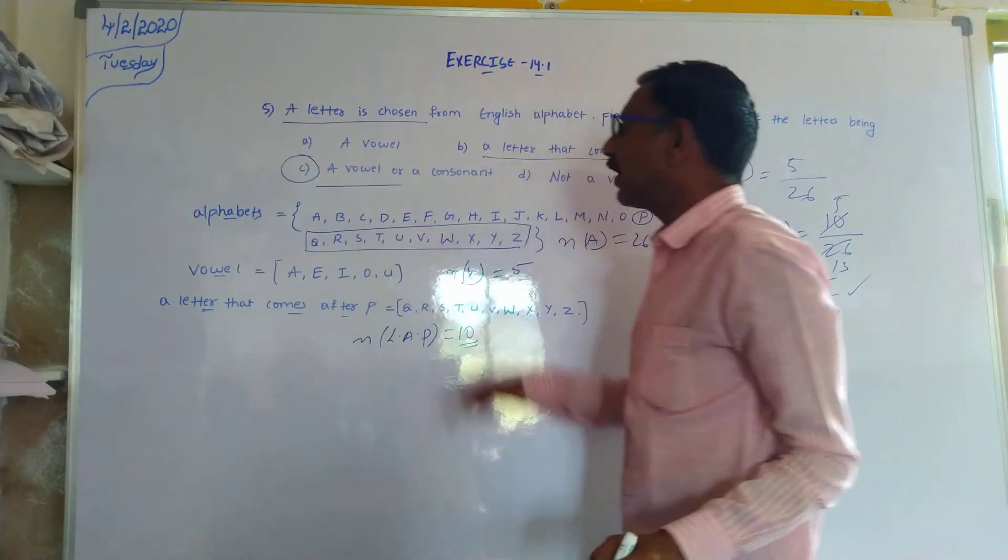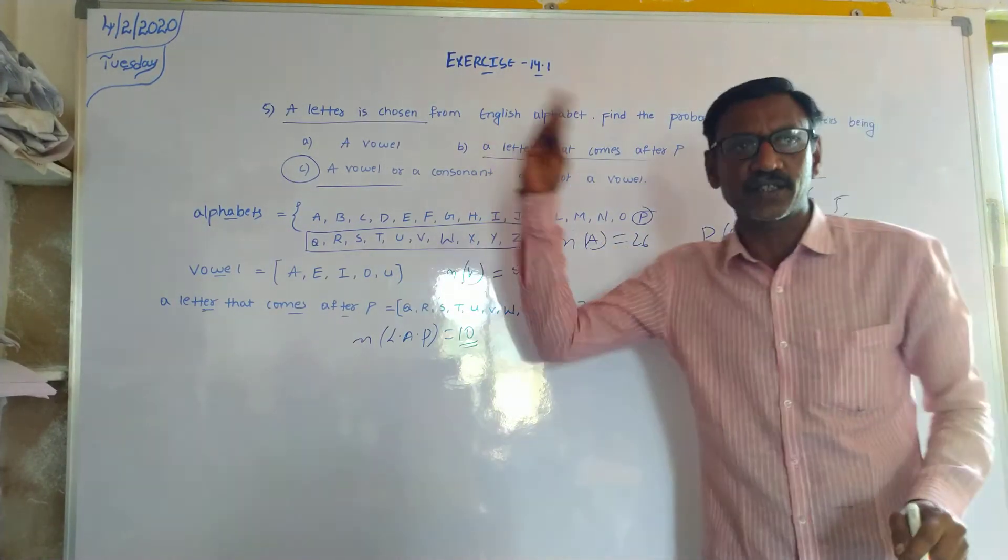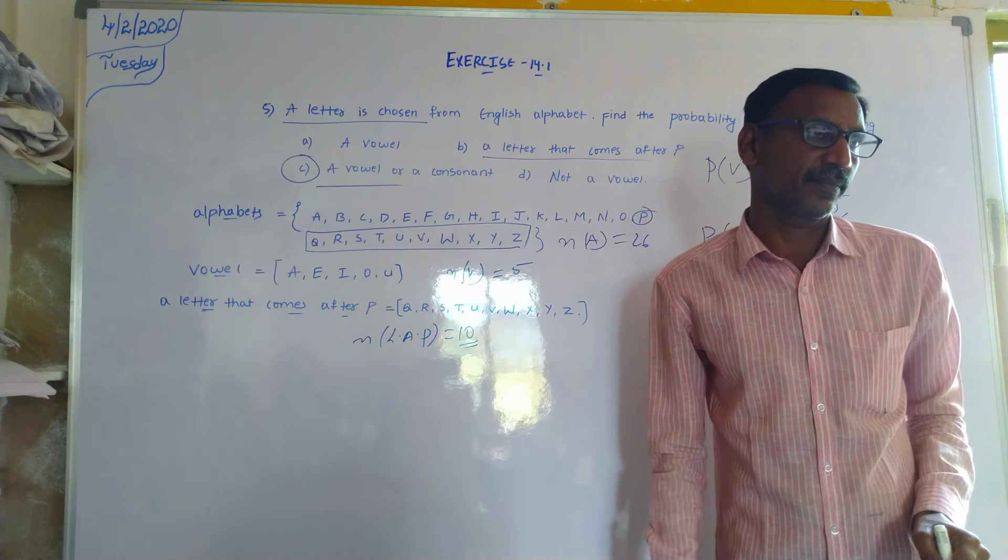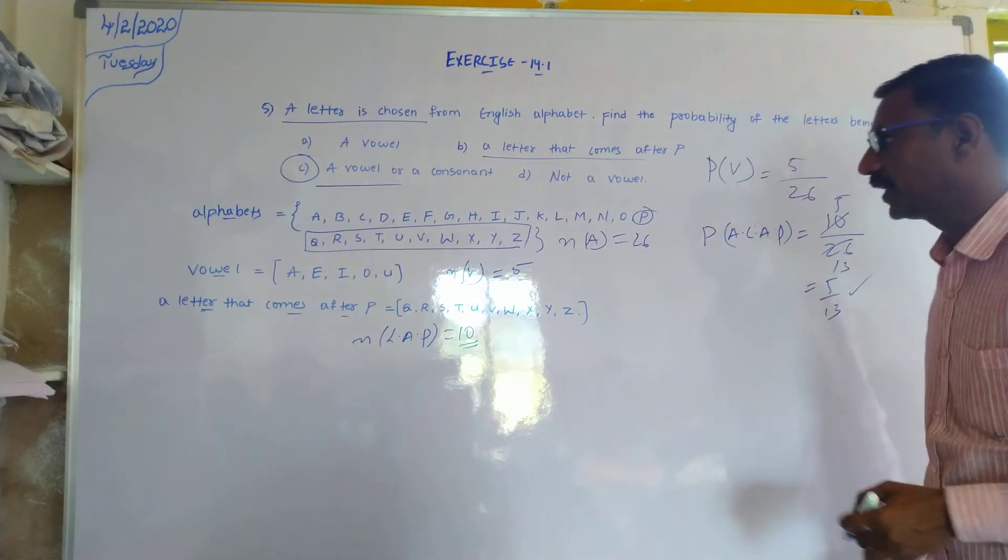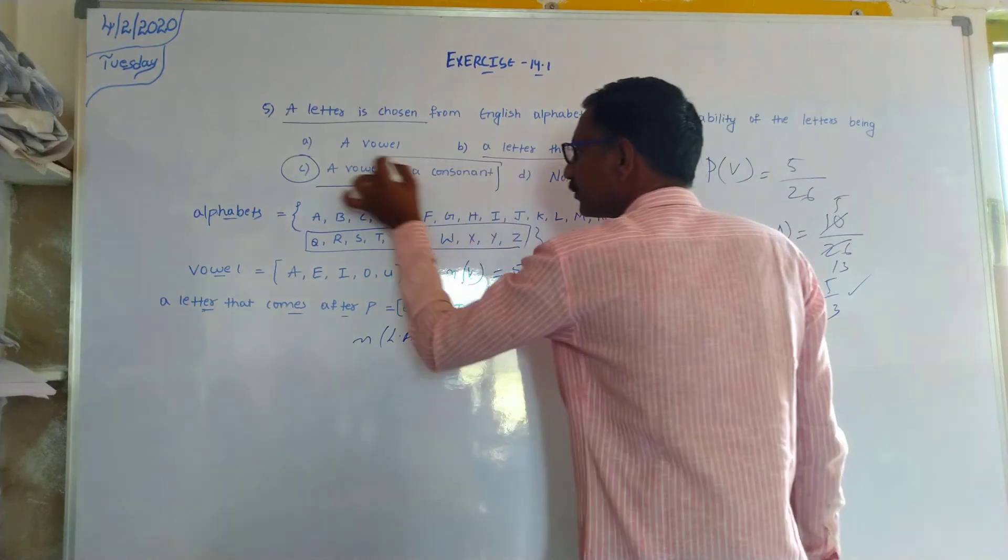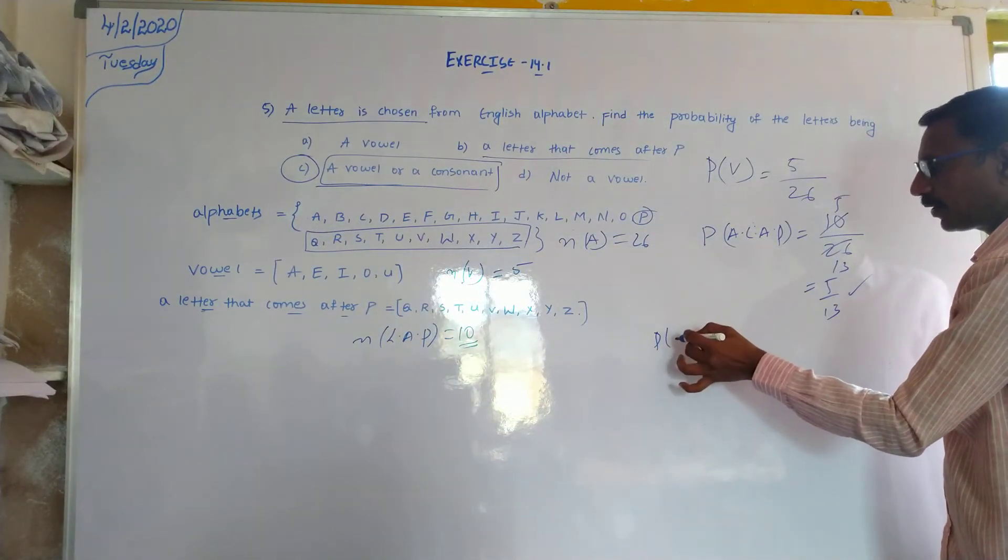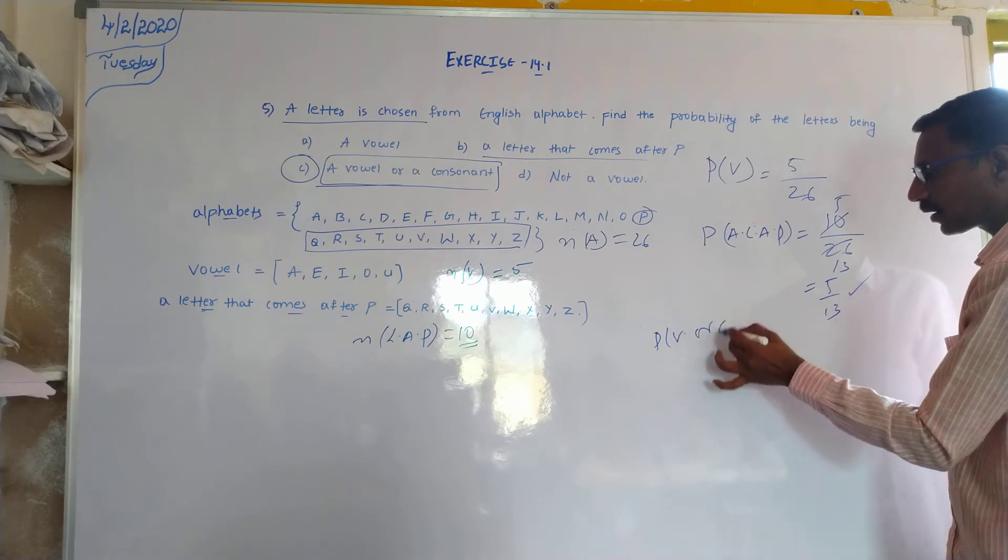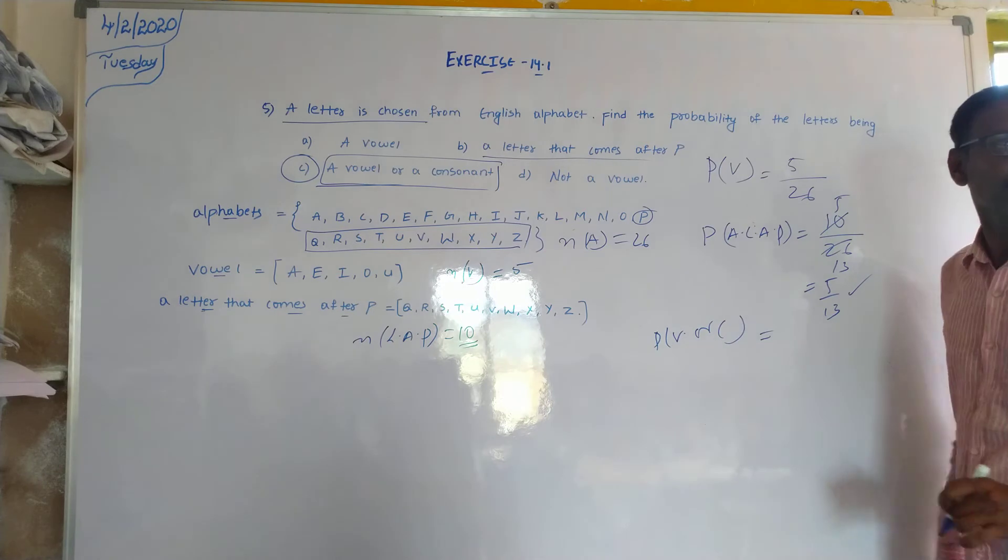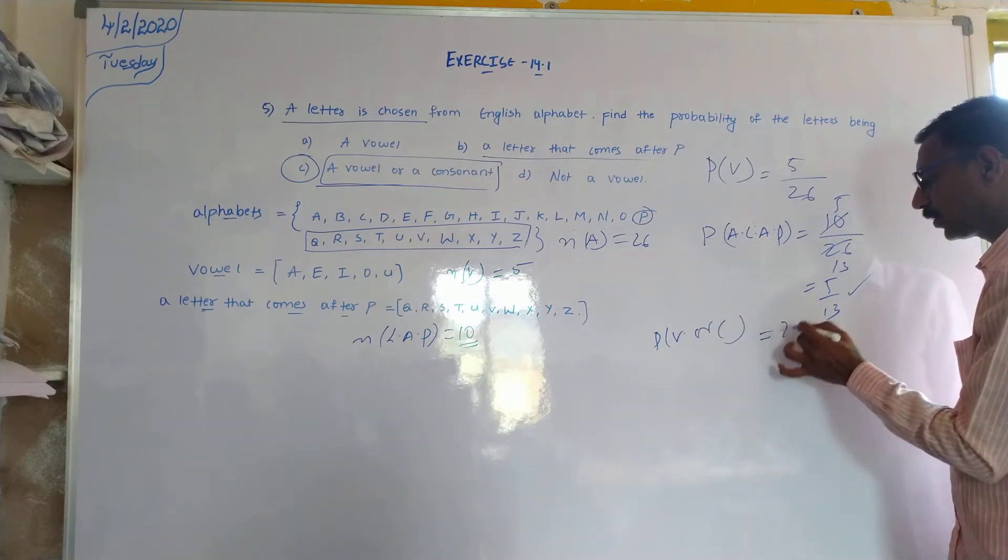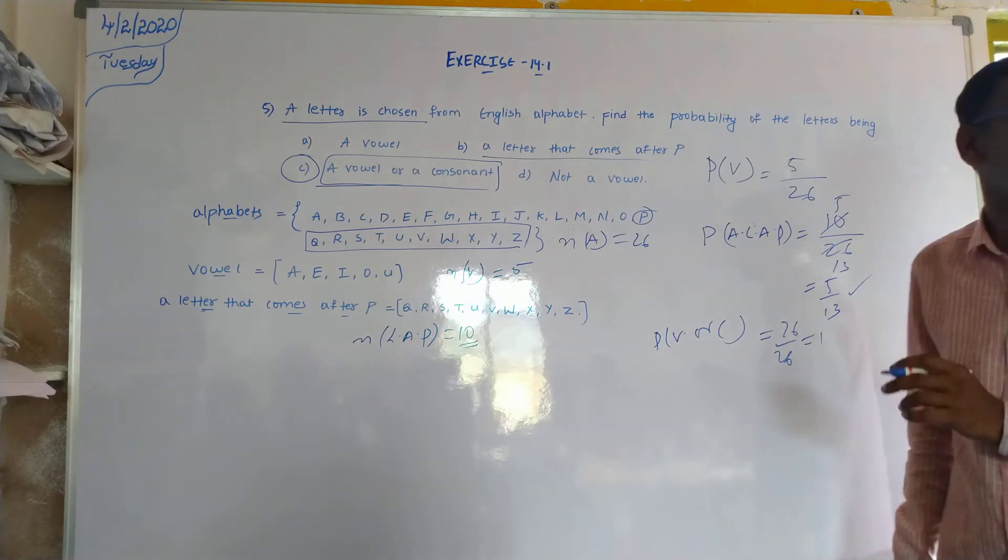The probability of a vowel or a consonant. This equals to 26 by 26, that equals to 1.